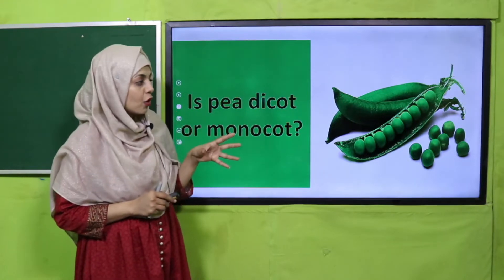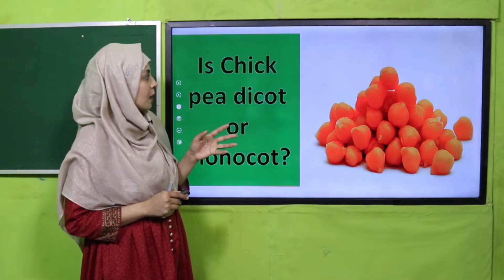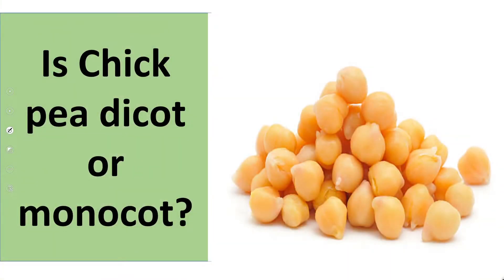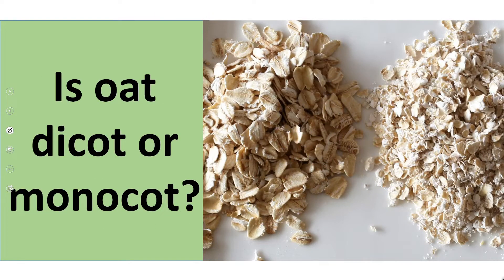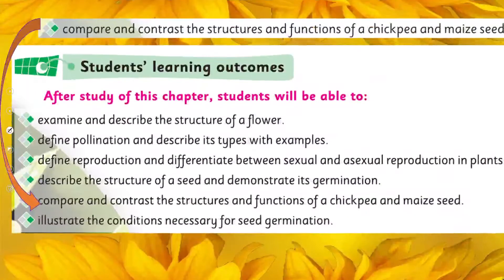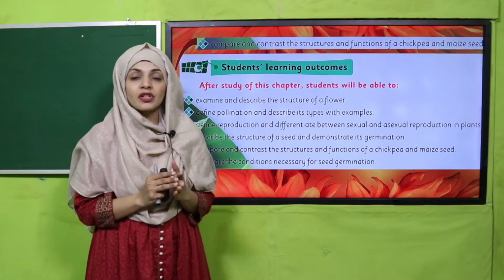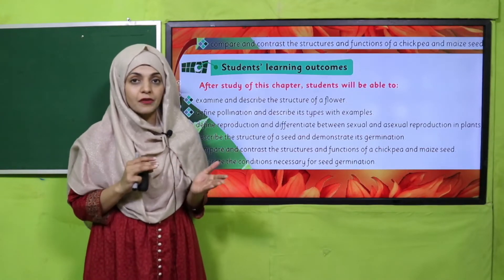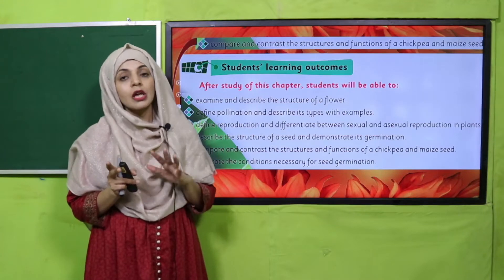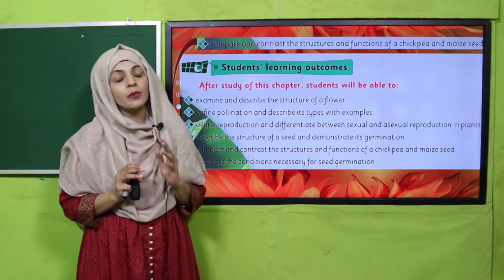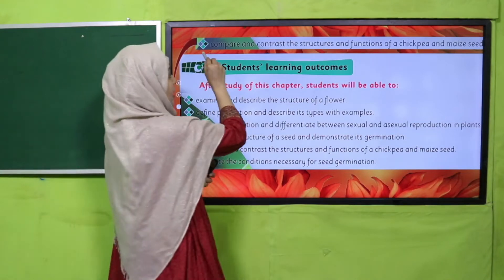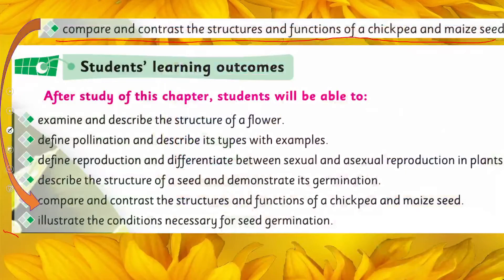These are dicots, and then come the chickpeas — these are also dicots. Then come the oats — these are monocots. If we see the internal structure of a seed, compare and contrast the structure and functions of chickpea and maize seed.